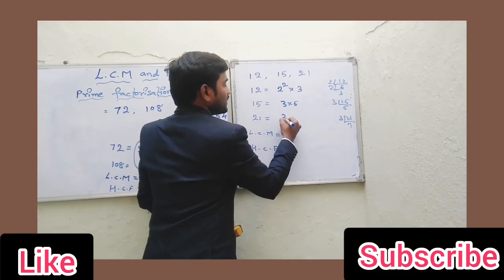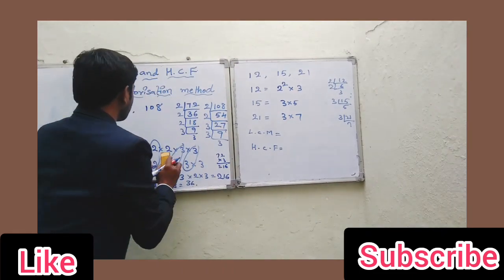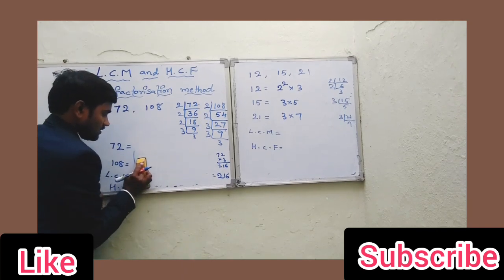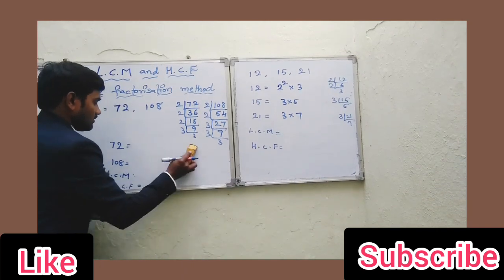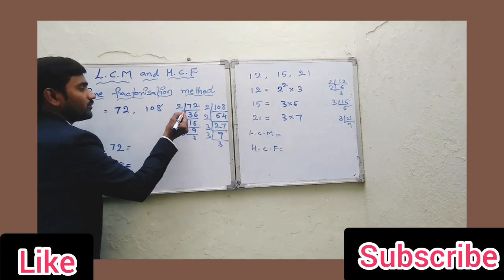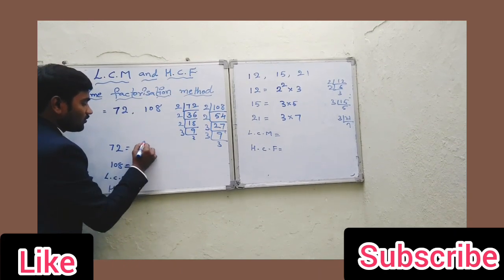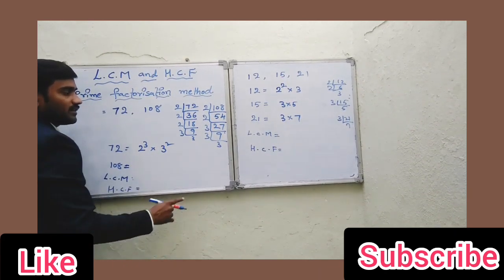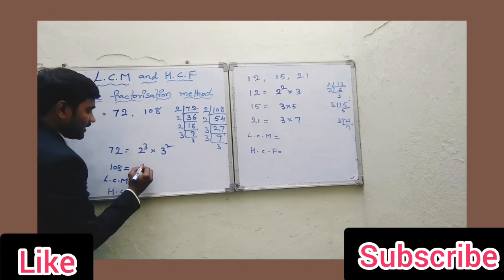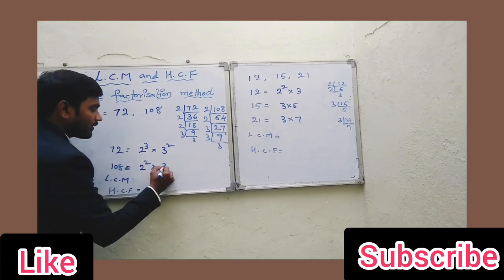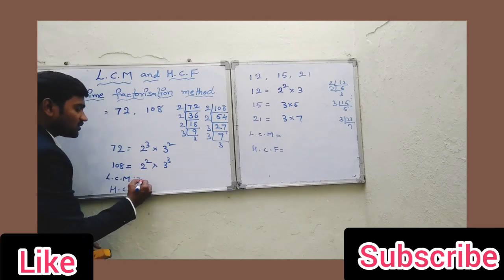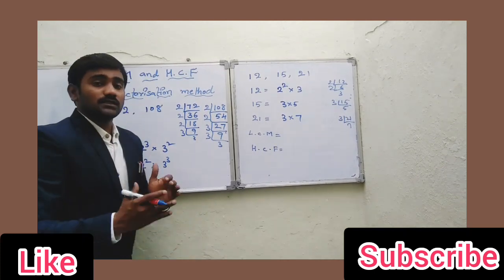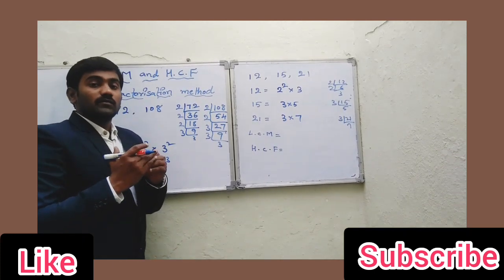And 21 equals 3 × 7. Now, 72 can be written as 2³ × 3², and 108 can be written as 2² × 3³. Based on powers, for LCM we always take the highest power of each and every factor of the numbers.